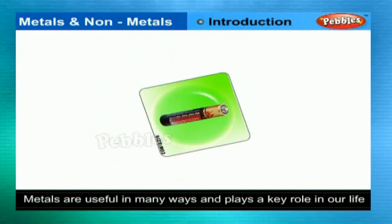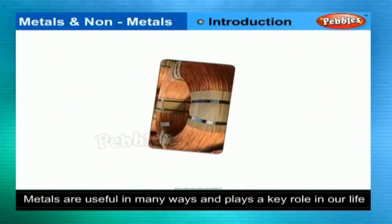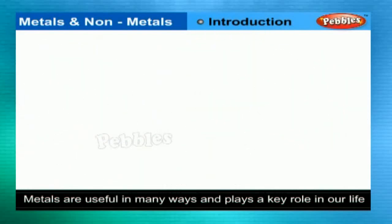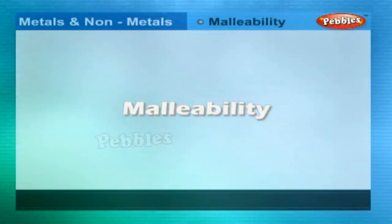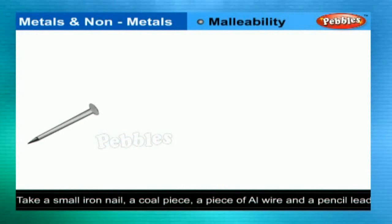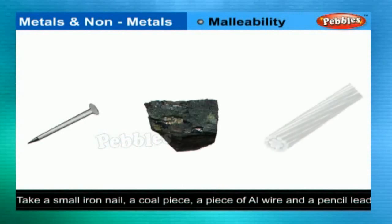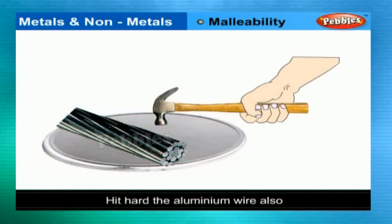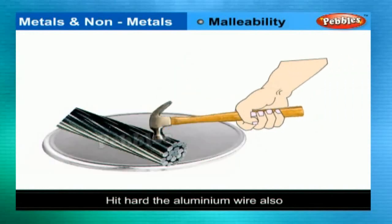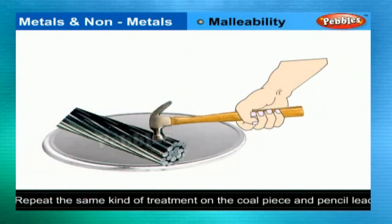Malleability. Take a small iron nail, a coal piece, and a peel with a hammer. Try to hit hard. Hit the aluminium wire hard also. The shape of the iron nail and the aluminium wire changed on beating. If they were beaten harder, these could be changed into thin sheets.